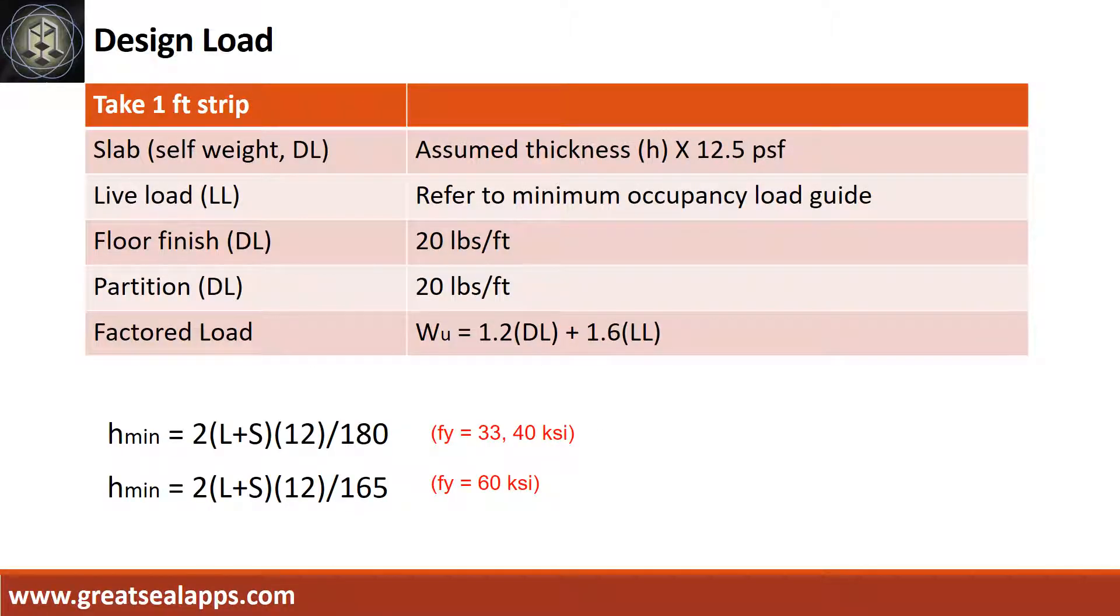Sum up all the dead load from self-weight of slab, floor finish, and partition if any. Get the live load from minimum occupancy load guide and get the factored load. Check the assumed thickness from the given minimum thickness formula.